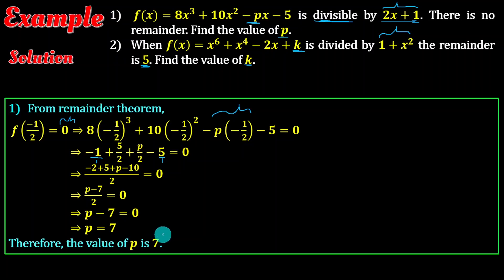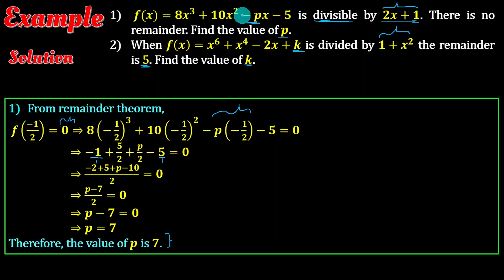The P is 7. The F of X is 2x plus 3, and F of X is 1. If we don't have to take a long division, we can see that the synthetic division is 1.